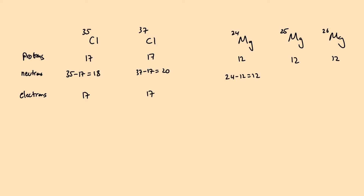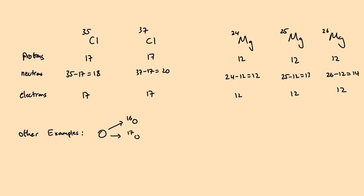For magnesium, if the atom is neutral, the proton number has to be equal to the number of electrons, which is 12. All other elements have isotopes. For example, oxygen has three common isotopes: oxygen-16, 17, and 18. Carbon also has three common isotopes — carbon-12, 13, and 14 — and carbon-14 is normally used for carbon dating. So all these isotopes exist in reality.